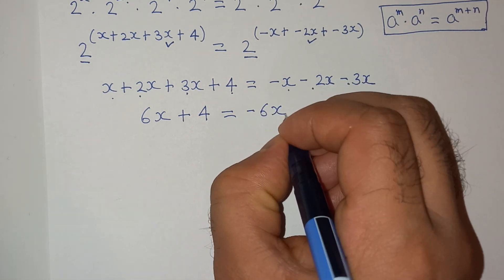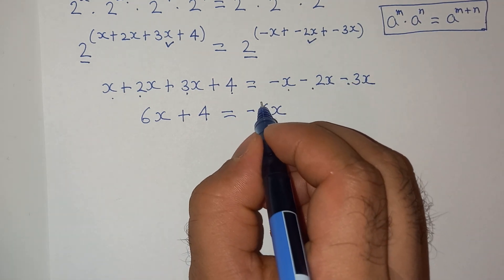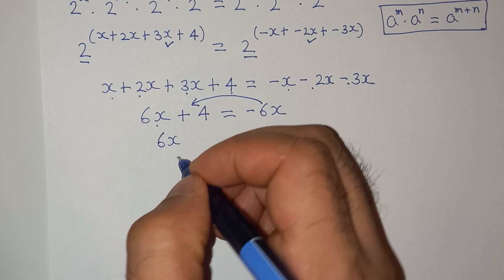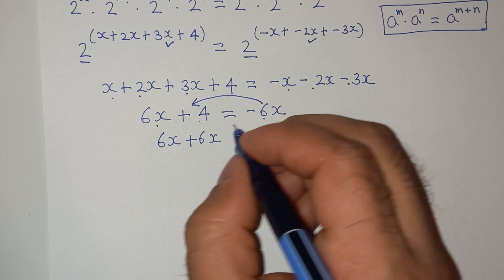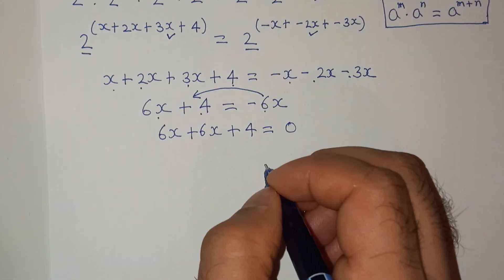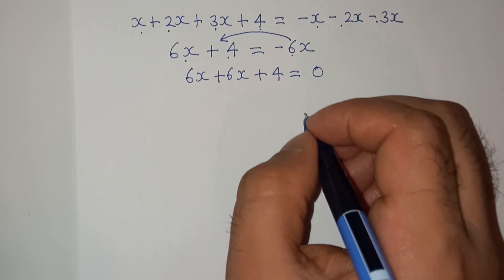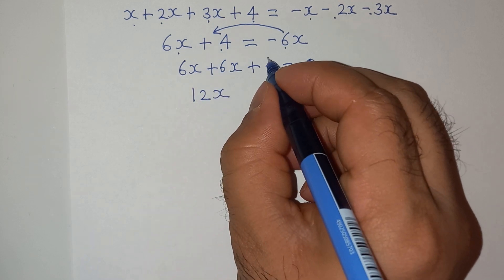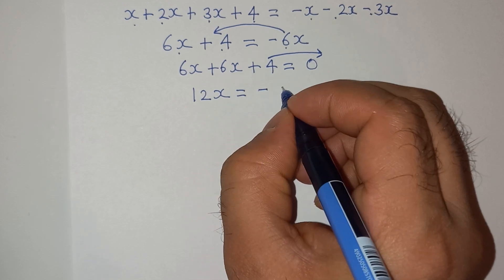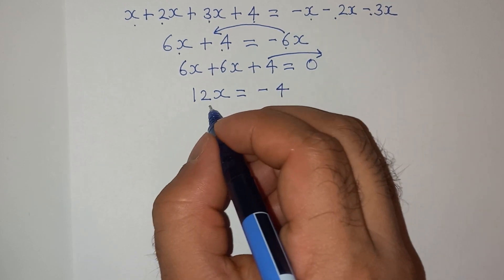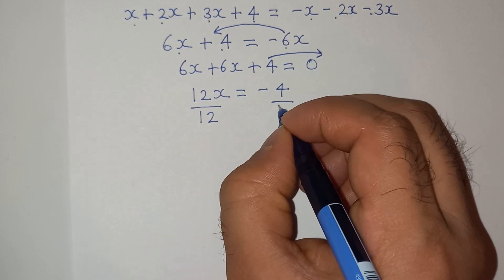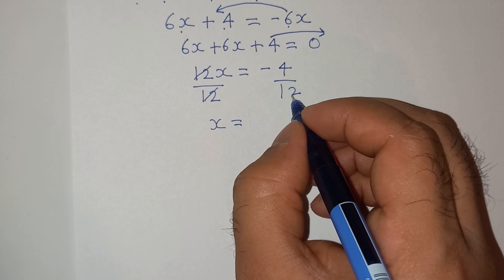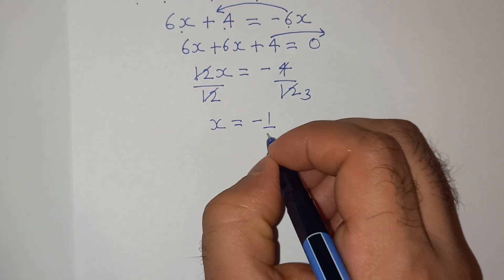So let's take minus 6x to the left hand side. So we have 6x plus 6x plus 4 equals to 0. So 6x plus 6x is 12x. Let's take the plus 4 to the right hand side, equals to minus 4. Now let's divide both sides by 12. So 12 and 12 cancel, giving us x equals to minus 4 divided by 12, which is minus 1 divided by 3.